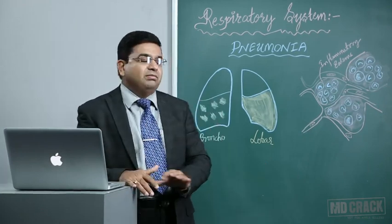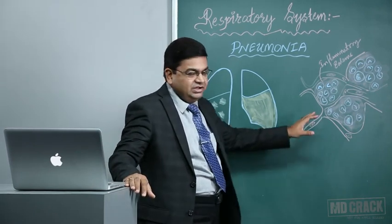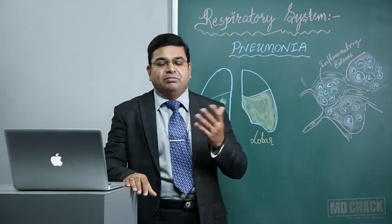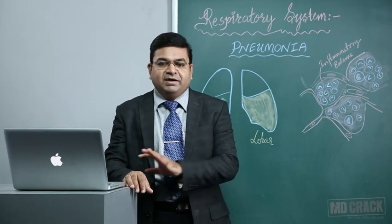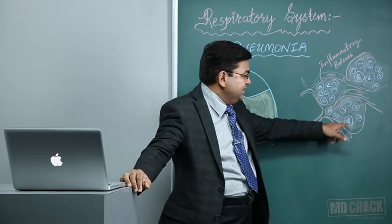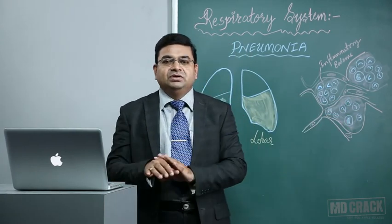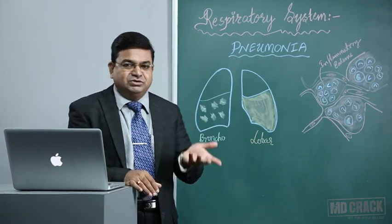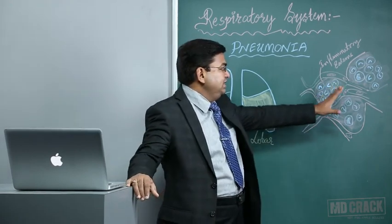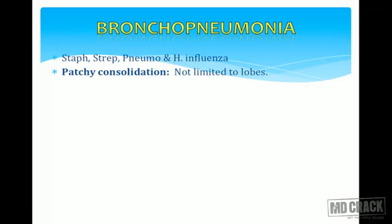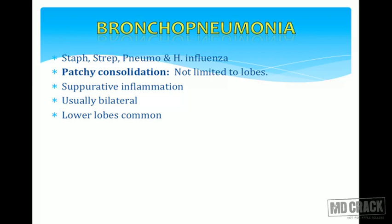Whether it is bronchopneumonia or lobar pneumonia, microscopically they appear the same — it is not possible to differentiate. Most of the time we will also see the gross specimen and then label cases as broncho or lobar. What we see microscopically is alveoli loaded with inflammatory cells, predominantly neutrophils. There will be inflammatory edema appearing as homogeneous eosinophilic material, along with neutrophils, neutrophilic debris, few macrophages, hemosiderin-laden macrophages, and carbon particles. Bronchopneumonia is most commonly due to Staph or Strep, sometimes pneumococci or H. influenzae.